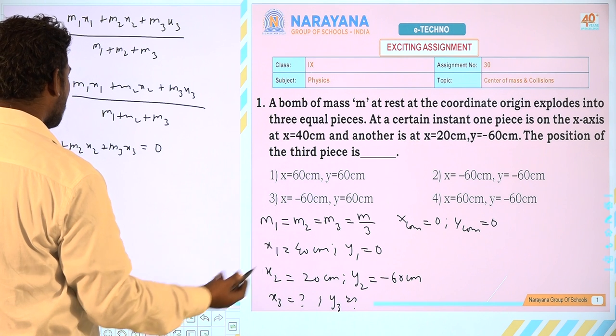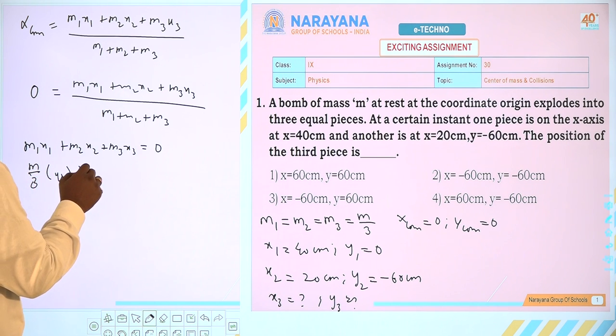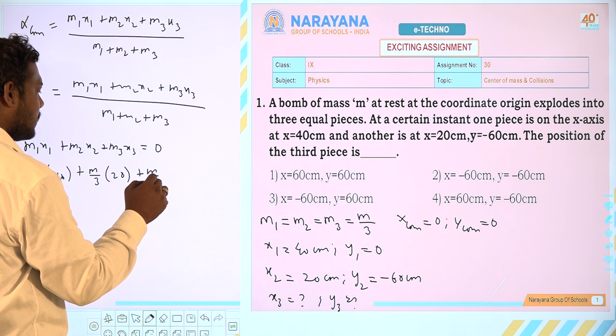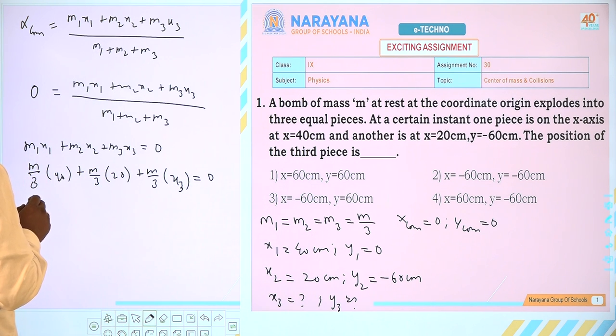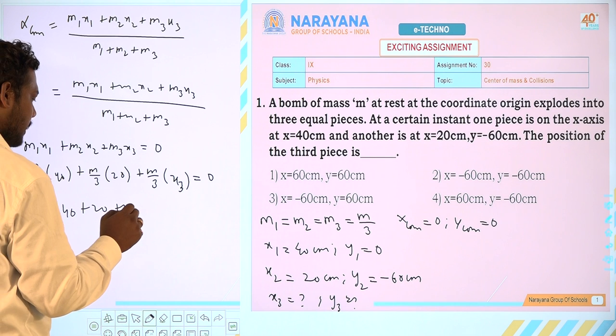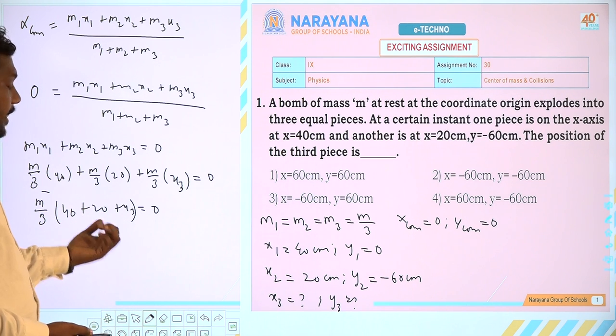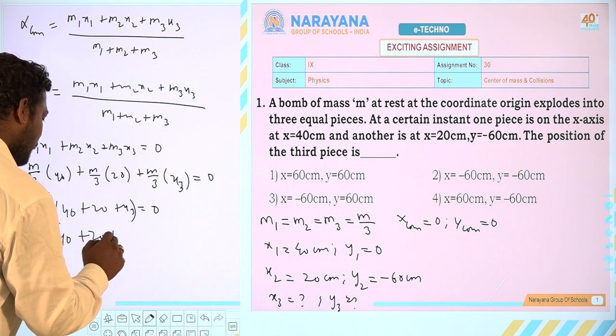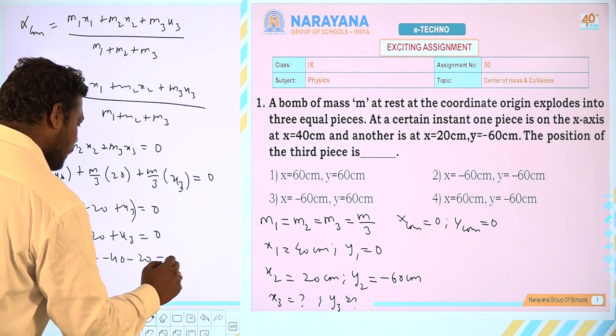Substitute the values of M1, M2 and M3. So M1=M/3 only. So M1x1 is 40 plus M2x2 plus M3x3 = 0. So when you take M/3 common, that is 40 + 20 + x3 = 0. So 40 + 20 + x3 = 0. So x3 = -40 - 20 = -60 cm.